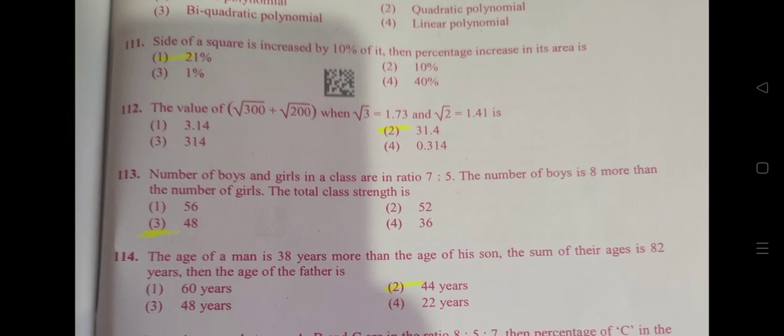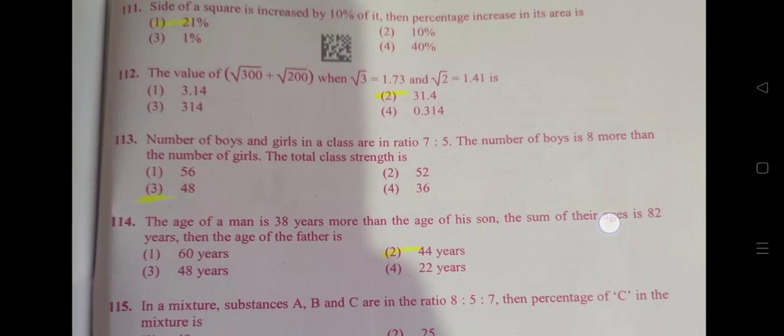Number of boys and girls in a class are in a ratio of 7:5. The number of boys is 8 more than the number of girls. The total class strength is 48.